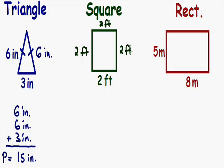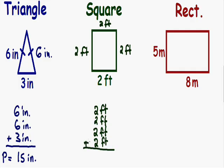To find the perimeter, we need to add all the sides. Our bottom side is 2 feet, our left side is 2 feet, our top side is 2 feet, and our right side is also 2 feet. If we add all these together, our perimeter is equal to 2 plus 2, which is 4; 4 plus 2 is 6; and 6 plus 2 is 8 feet.